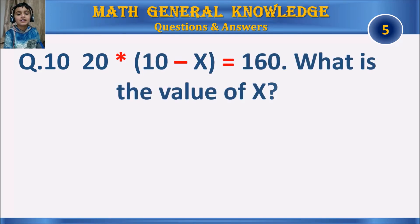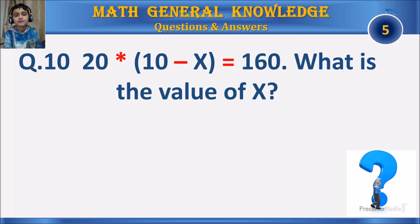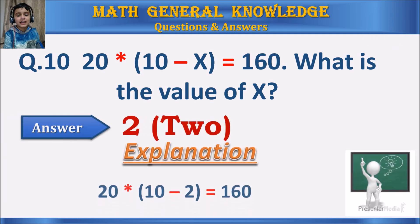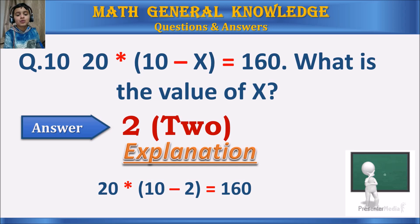Question 10: 20 times 10 minus x equals 160. What is the value of x? Your time starts. The answer is 2, because 10 minus 2 equals 8, and 20 times 8 equals 160.